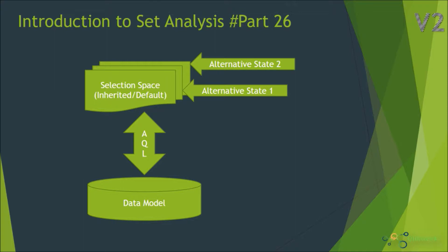By default, whatever selections you are making will directly impact the visualizations available in that layout or in that particular state. State here means that on top of the data model, QlikView will create a selection space, which is responsible for capturing the user's selections. If a user selects any value from any field, those selections will impact the respective visualizations of that application or sheet.